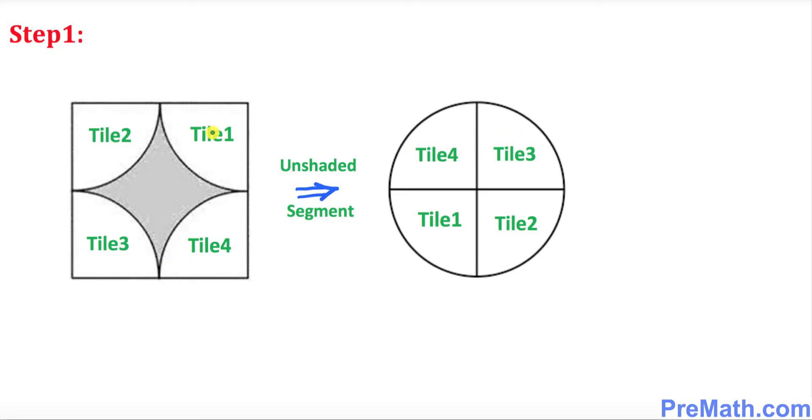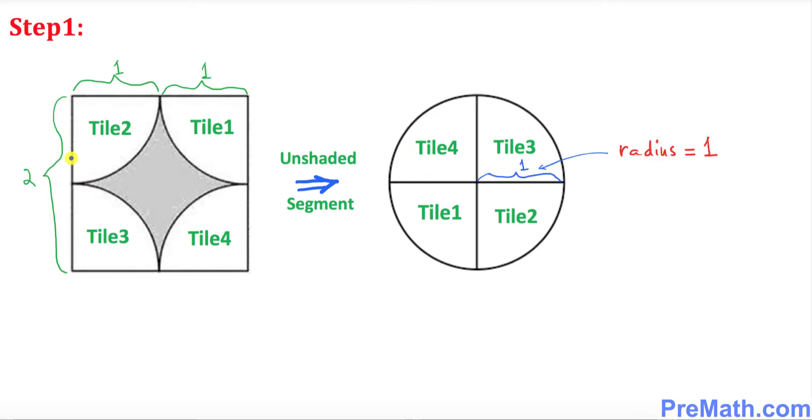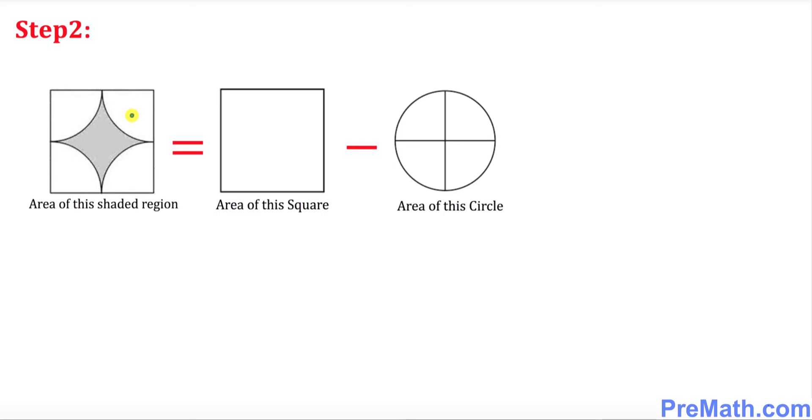These tiles go over here, and this unshaded segment yields a full circle. Moreover, each side of this square is two units, that has already been given to us. And if you look at this, each part for this tile is going to be one unit. And when you restack them over here, we can easily see that this radius turns out to be one unit.